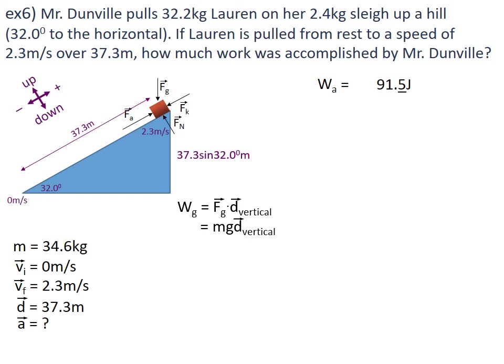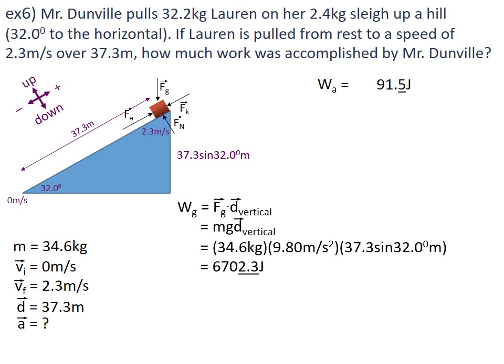Now I can sub those numbers in: mass is 34.6 kilograms, gravity is 9.80 metres per second squared, and the displacement vertically is 37.3·sin(32°) metres. I punched that into my calculator, and the work done against gravity comes to 6,702.3 joules.